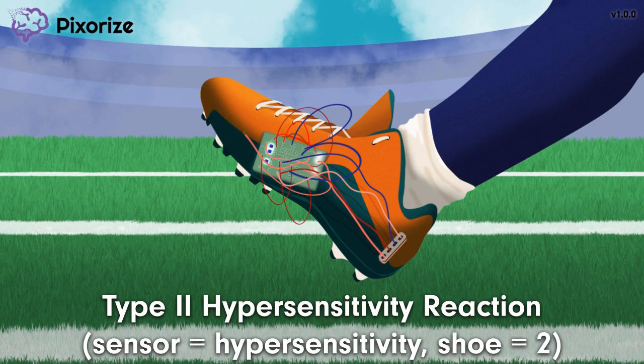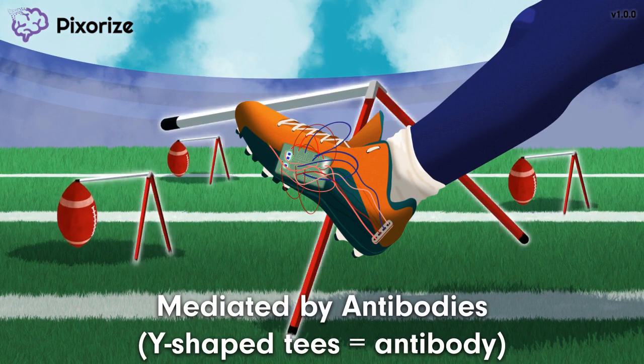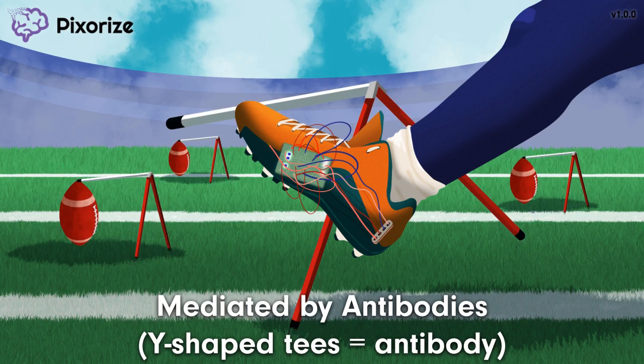Type 2 hypersensitivity describes a type of unwanted immune reaction. If we're measuring kicking strength, we obviously need T's to hold the footballs. You see those Y-shaped kicking T's? Well, these Y-shaped T's kind of remind me of antibodies, since antibodies are also Y-shaped. These Y-shaped kicking T's should remind you of antibodies, the main mediator of Type 2 hypersensitivity. Type 2 hypersensitivity is specifically caused by antibodies directed against harmless antigens expressed on a cell's surface.